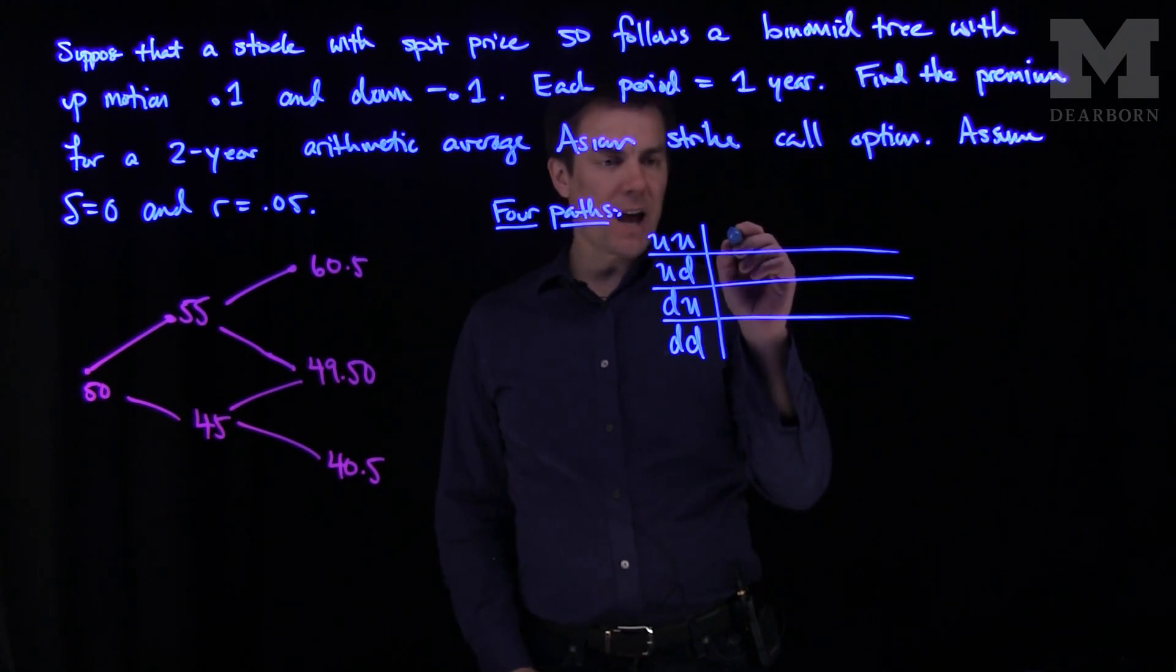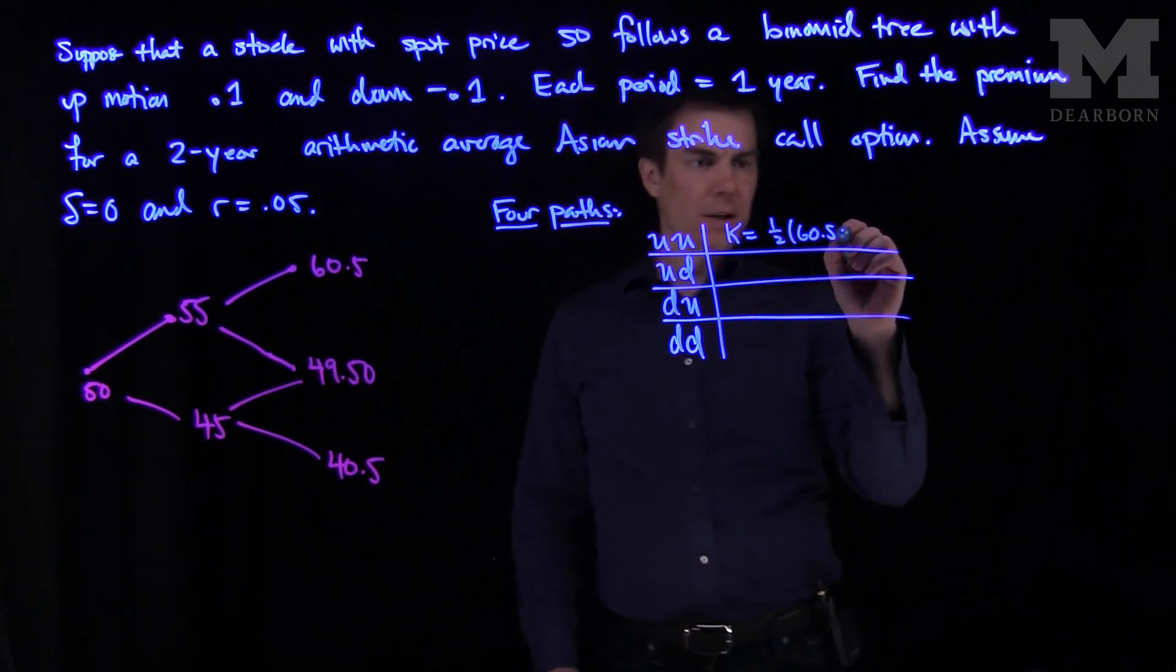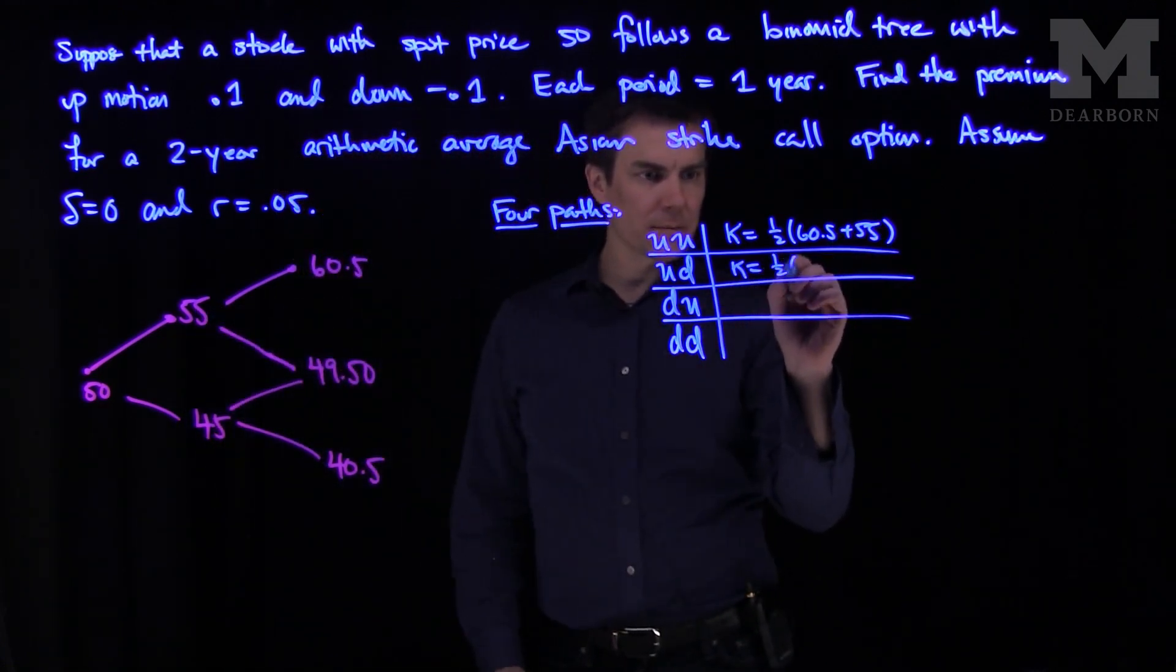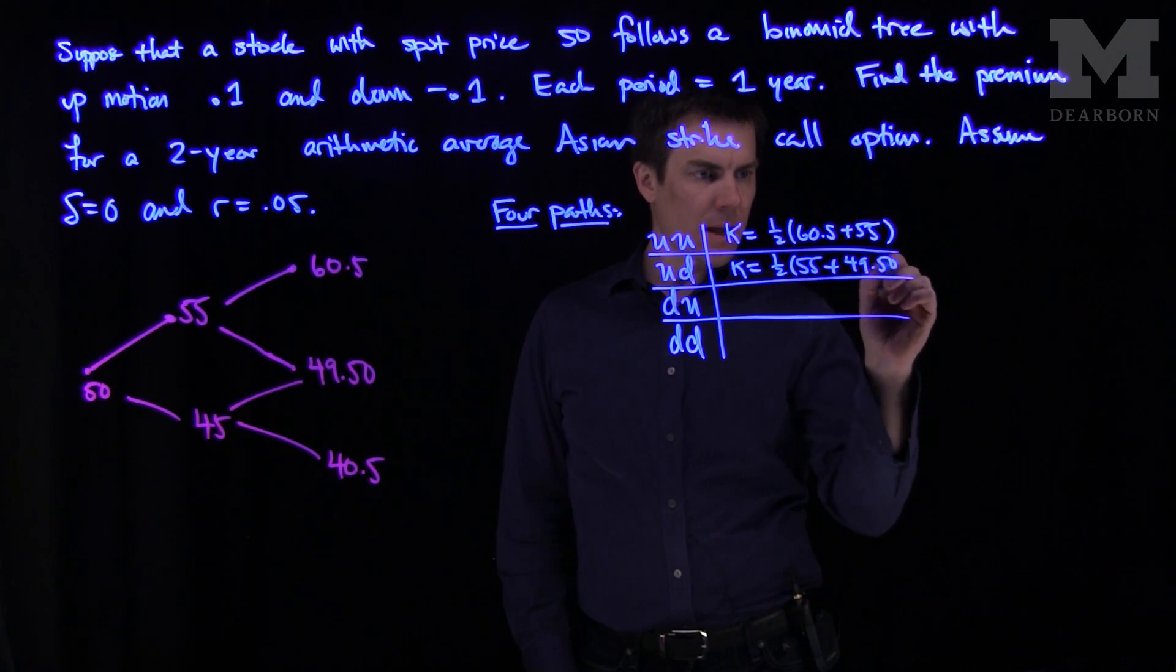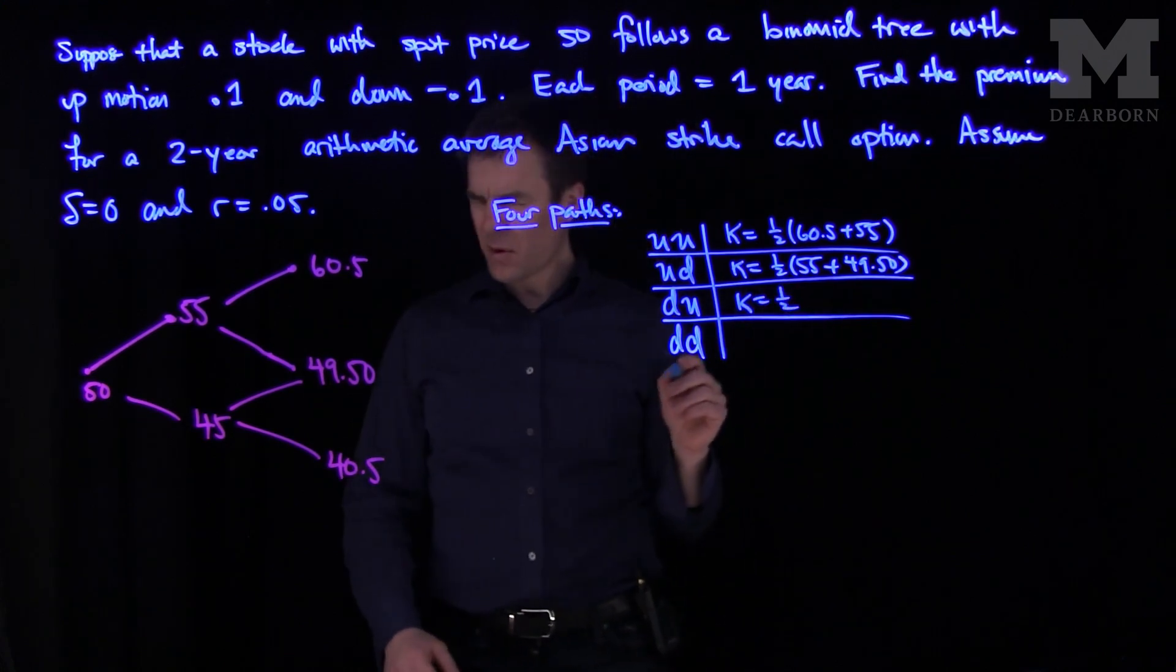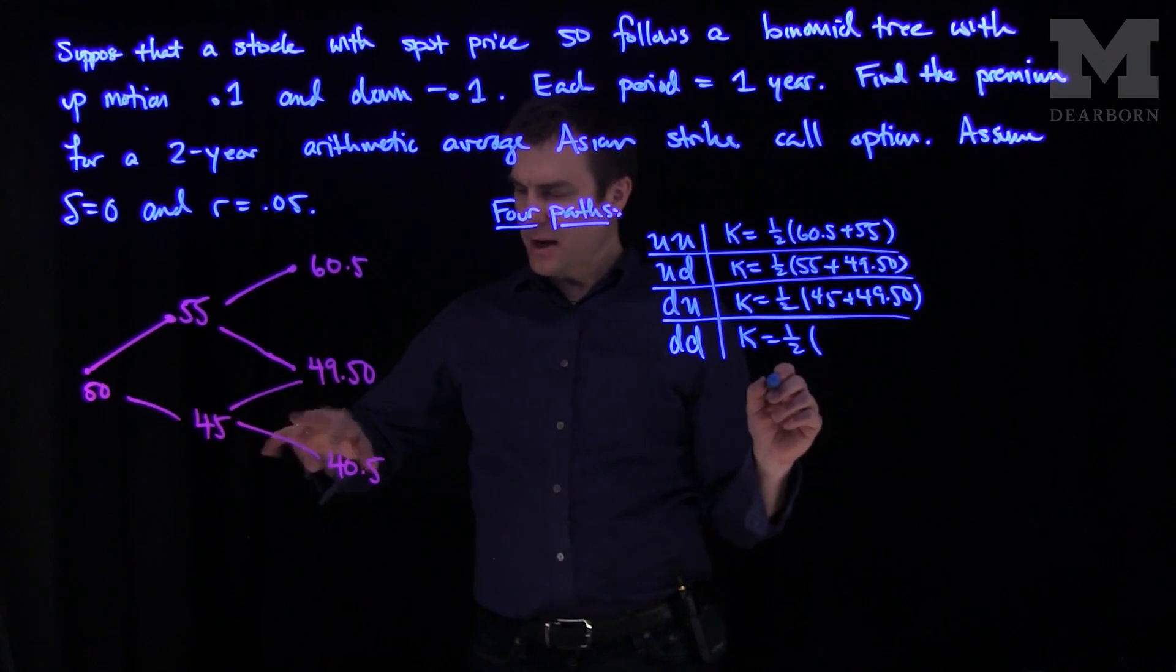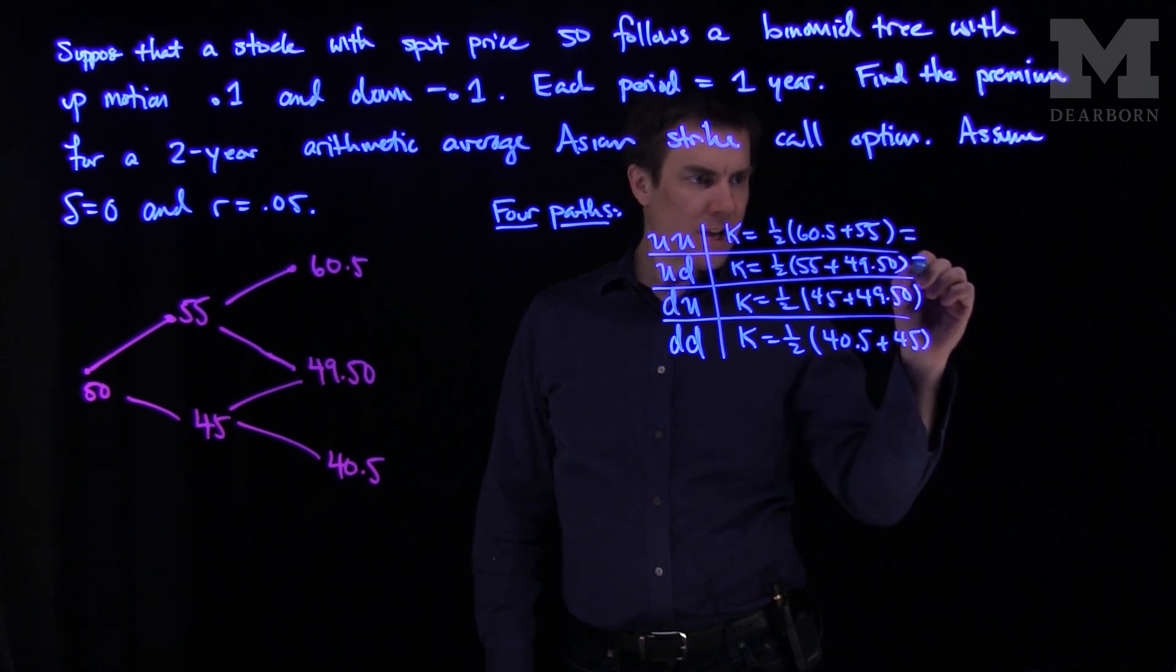So on the up-up, what we'll have is we'll have an average strike price. This K will be one-half, 60.5 plus 55. Over here the strike K on this node. So now we went up and then we went down. So we'll have one-half of 55 plus 49.5. If we went down then up, then our strike K will be one-half of 45 plus 49.5. And K over here will be one-half. And then I went down down, so I'm going to have a 40.5 plus 45.